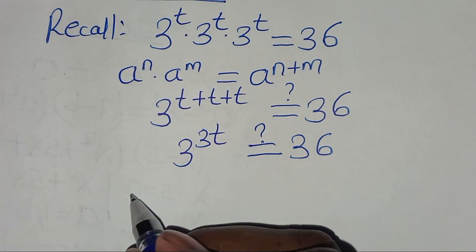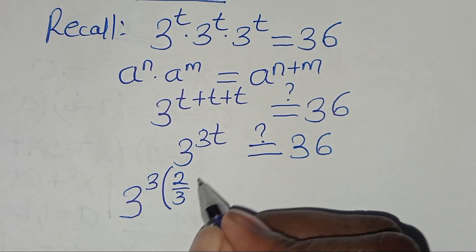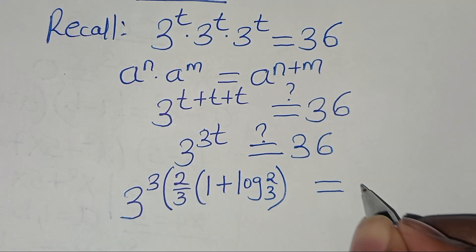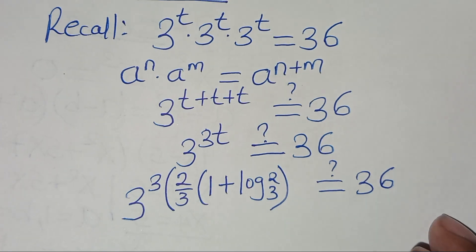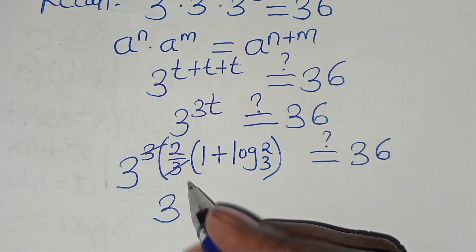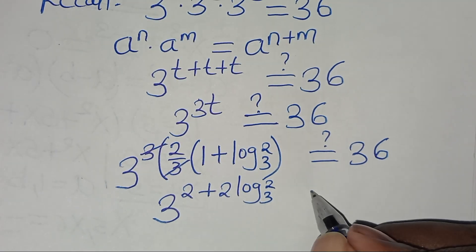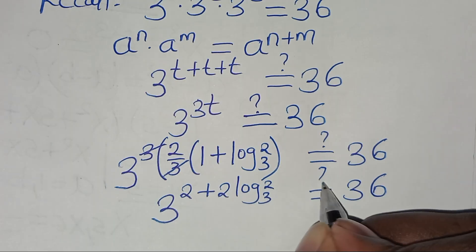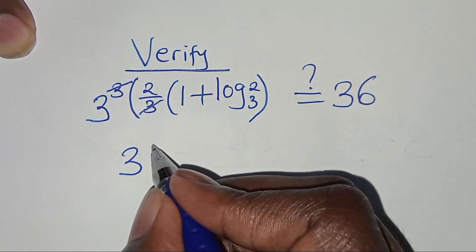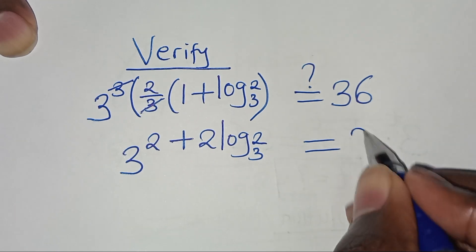Let's substitute the value of t. We have 3 to the power of 3 times t, where t is 2 over 3 times the quantity 1 plus log 2 to base 3. This is supposed to give us 36. Simplifying the 3 and 3, we have 3 to the power of 2 plus 2 log 2 to base 3. This is supposed to give us 36.